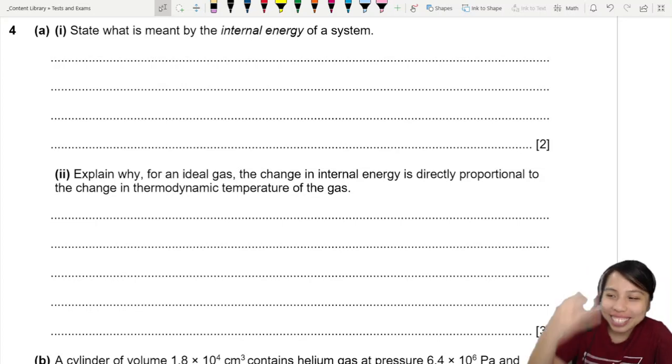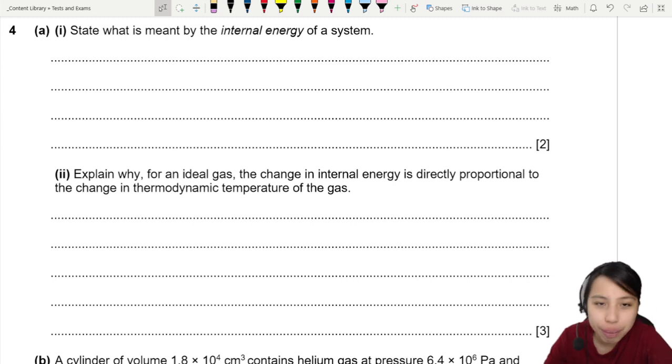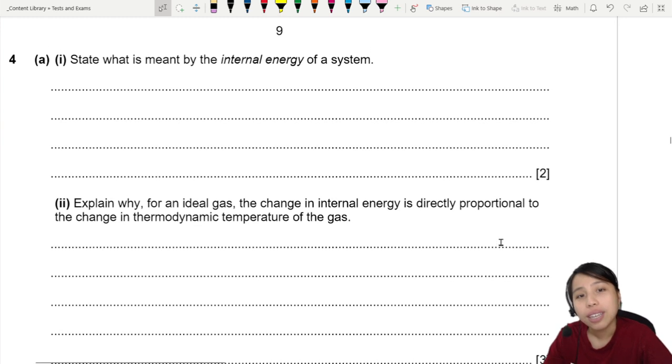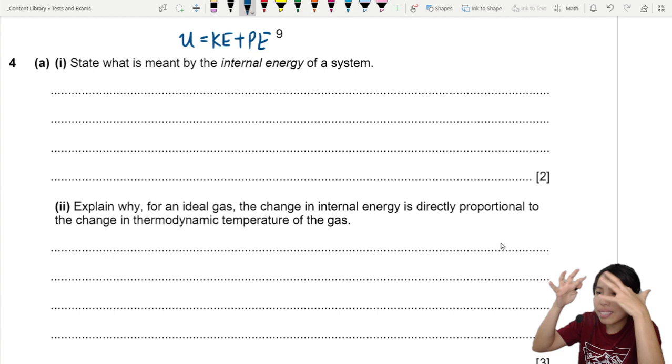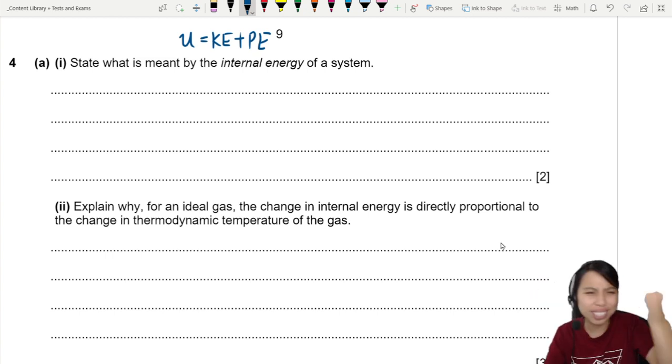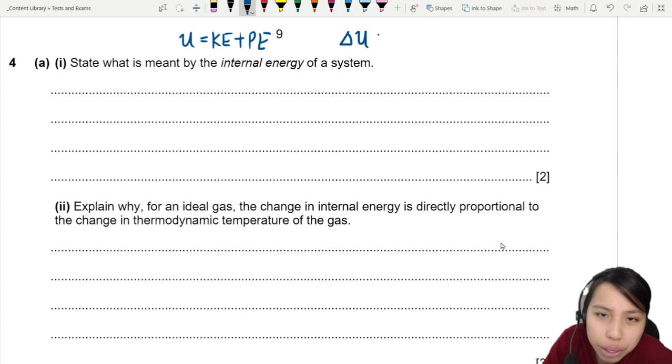State what is meant by the internal energy of a system. Okay, there's always two definitions that people get confused here. Internal energy is U equals to kinetic energy plus potential energy. This one is the real definition of internal energy. People get confused and say, Miss, but what about this one?